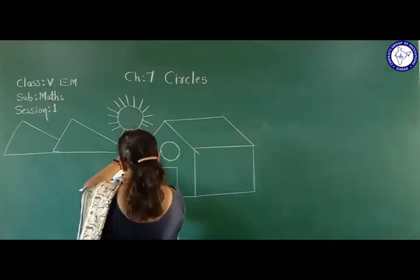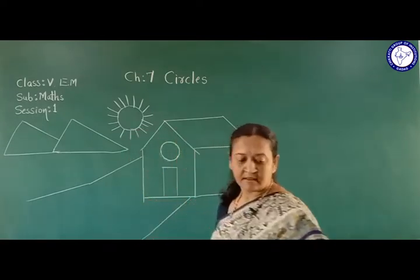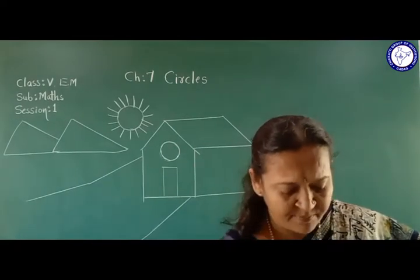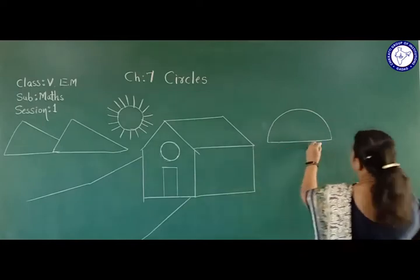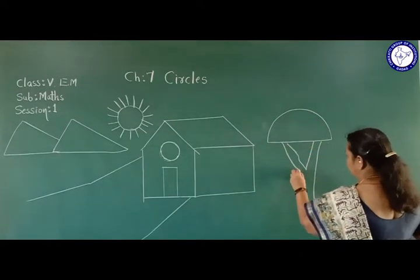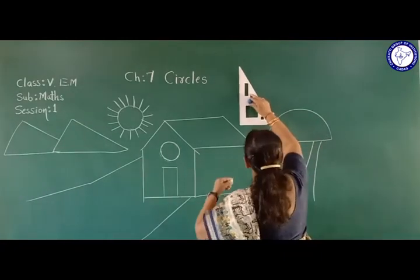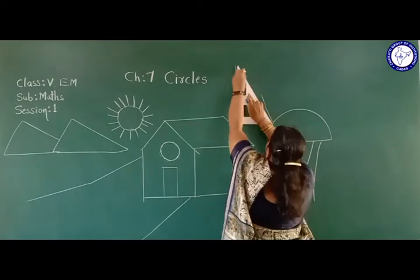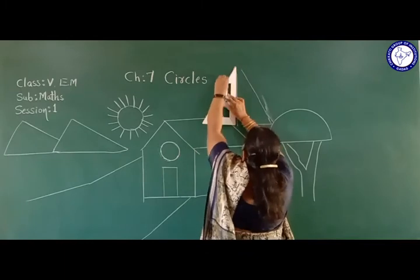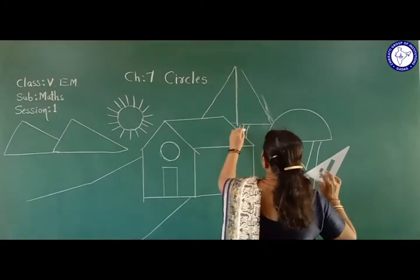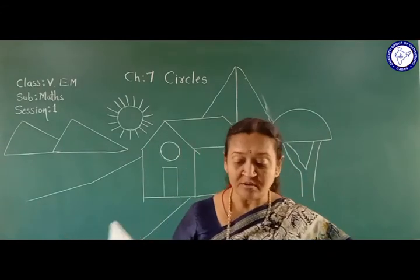Some roads are constructed, so you can use the scale for that. Then suppose we want to draw a tree - with the help of the protractor, we can draw a tree. Even with the help of the set square we can construct another tree - it is like an Ashoka tree. Keep it reverse and you will find a triangle shape. Here geometrical instruments are used to construct geometrical figures. You have observed how these instruments are used.